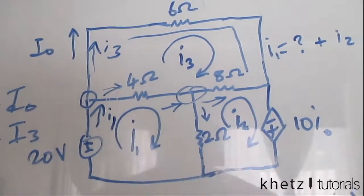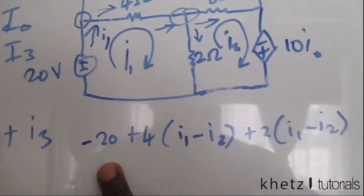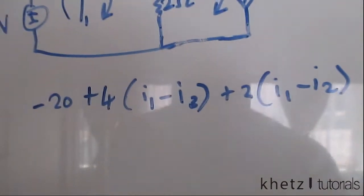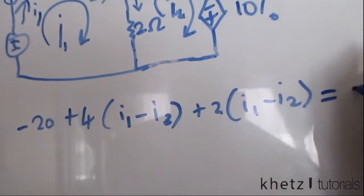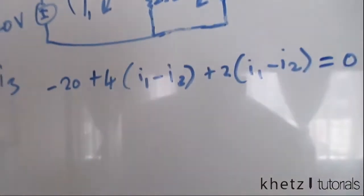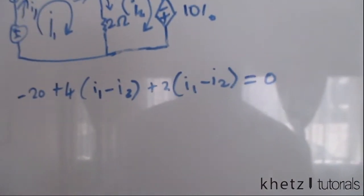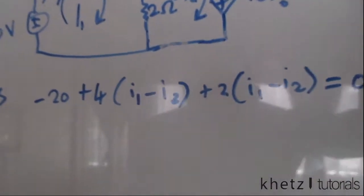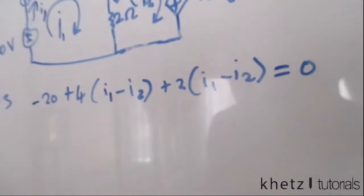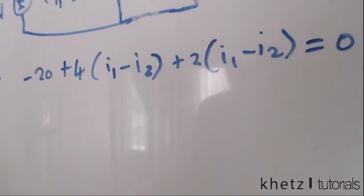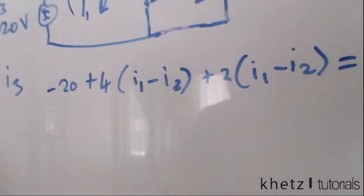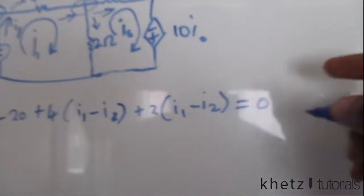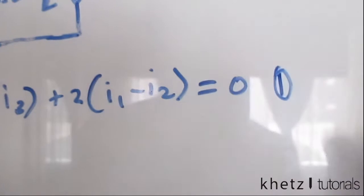So we have three branches and therefore three terms in the equation. We equate all of this to zero, since these are the voltages in a loop which should sum to zero - KVL, which applies everywhere. I'm not going to simplify this now; I'll simplify it later. So let's call it equation one.